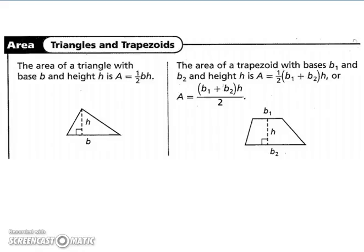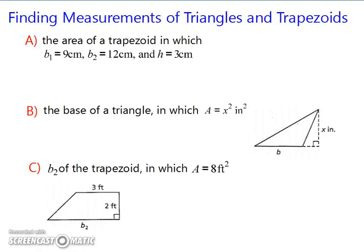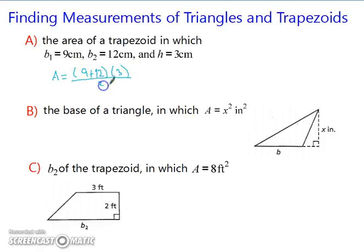Let's try a few examples. For the area of a trapezoid where base 1 is 9 centimeters, base 2 is 12 centimeters, and height is 3: the area equals the quantity 9 plus 12 times 3, divided by 2. So we have 9 plus 12 times 3 divided by 2, which gives us 31.5 centimeters squared.